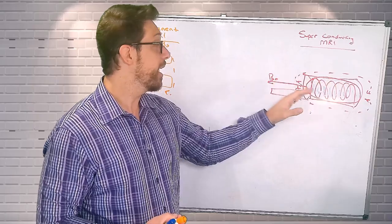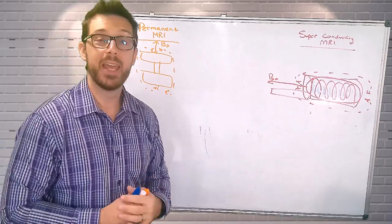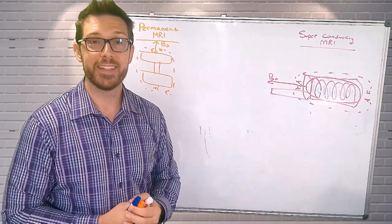And again, a takeaway from this magnet is that we have a horizontal B0. Thank you so much for watching, and I'll see you next time.